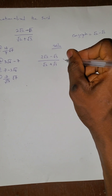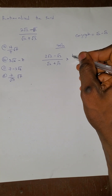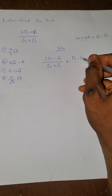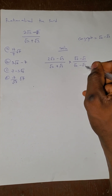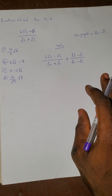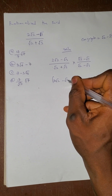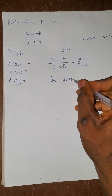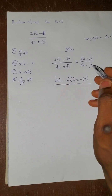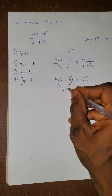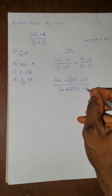Since the denominator is plus, the conjugate is minus. You have to multiply both numerator and denominator by this conjugate, which is √2 minus √3. So we get (2√2 minus √3) times (√2 minus √3) on top, and (√2 plus √3) times (√2 minus √3) on the bottom.